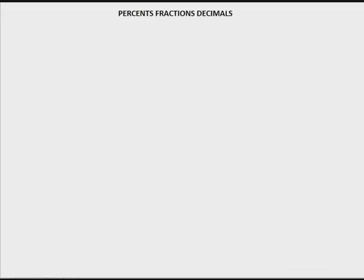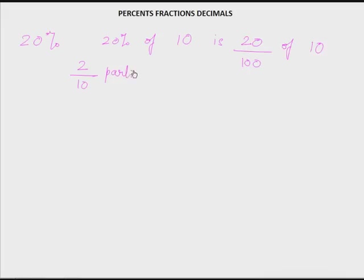The word percent means part of 100, 'cent' being the word for 100 as in century, centurion, centenary, bicentennial, etc. So if I say I have 20%, it means I have 20 parts of 100 parts of a thing. For instance, 20% of 10 is 20 parts out of 100 parts of 10, which is the same as saying 2 out of 10 parts of 10, which is of course 2. So 20% of 10 would be 2.